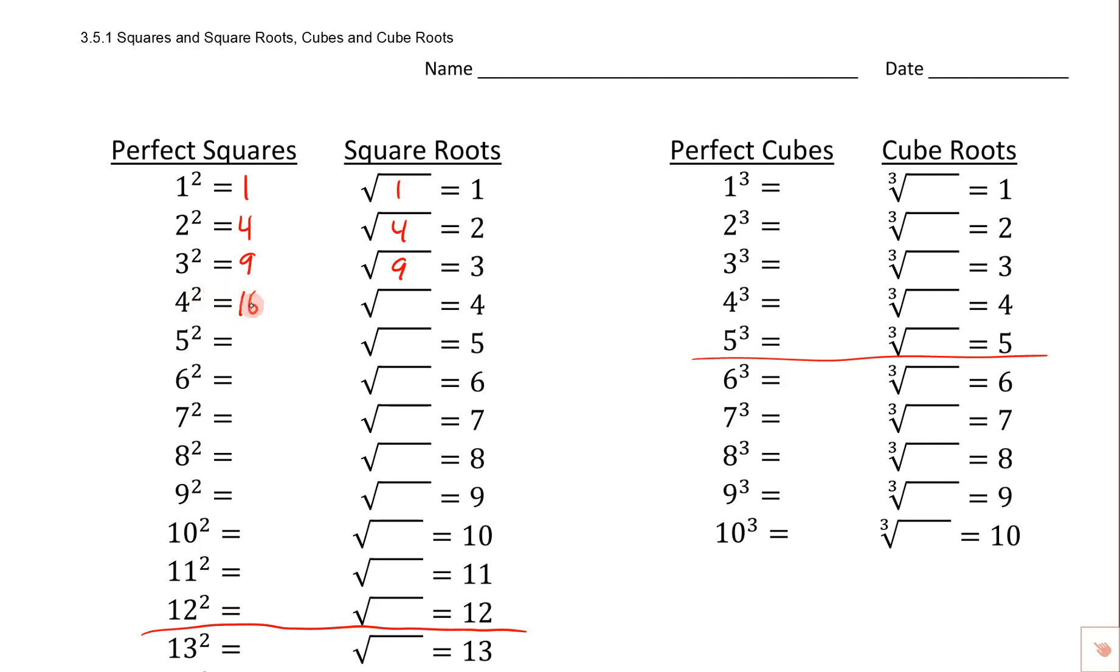So 4 squared is 16, square root of 16 is 4. 5 squared is 25, square root of 25 is 5, so notice how we're going right back to the number that we started with. 6 squared is 36, square root of 36 is 6. 7 squared is 49, so the square root of 49 is 7.